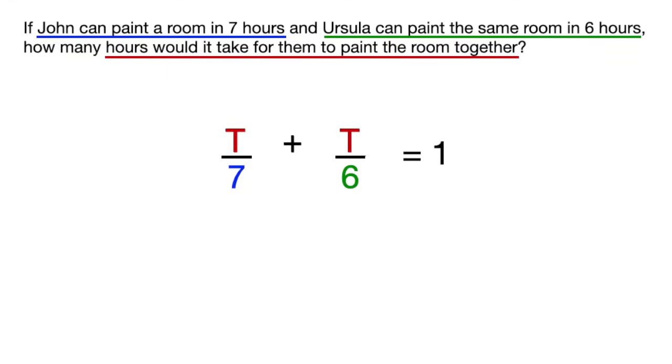All you have to do is combine the denominators and multiply it to everything in the equation, canceling out anything you can, and then simplifying the equation to 6t plus 7t equals 42.